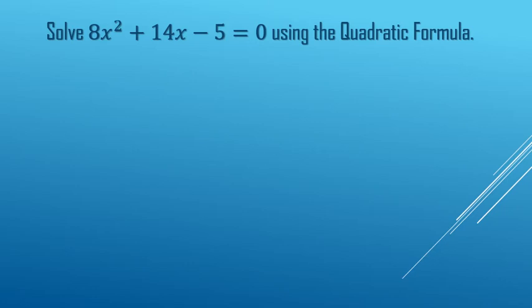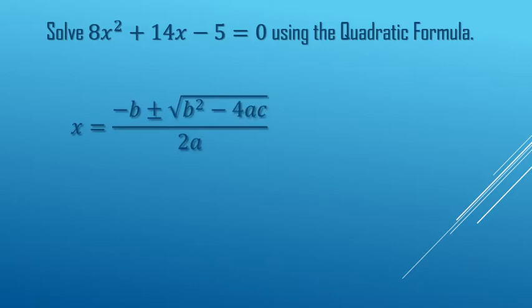All right, so here we are going to solve this quadratic equation using the quadratic formula, which is negative b plus or minus the square root of b squared minus 4ac all over 2a, where a, b, and c are the coefficients. We are going to break it up into smaller chunks.